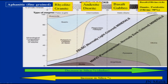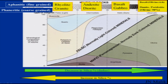We have aphanitic fine-grained rocks: rhyolite, andesite, basalt, and olivine-rich basalt. Then we have phaneritic coarse-grained rocks: granite, diorite, and gabbro. Recalling and comparing this with the cooling process, we can identify which is intrusive and which is extrusive.